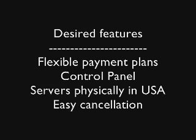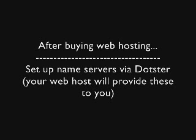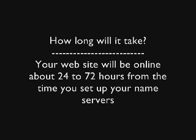Once you have your domain registration and web hosting in place, the next thing you have to do is go back to Dotster, log into your account, and set up what's called name servers. Name servers always look like ns1.thewebhost.com and ns2.thewebhost.com. When you log into the Dotster account you can go right to the domain and plug in these name servers. This does not cost you anything. After that, about 24 to 72 hours from then, your website will be live and you will be serving web pages.